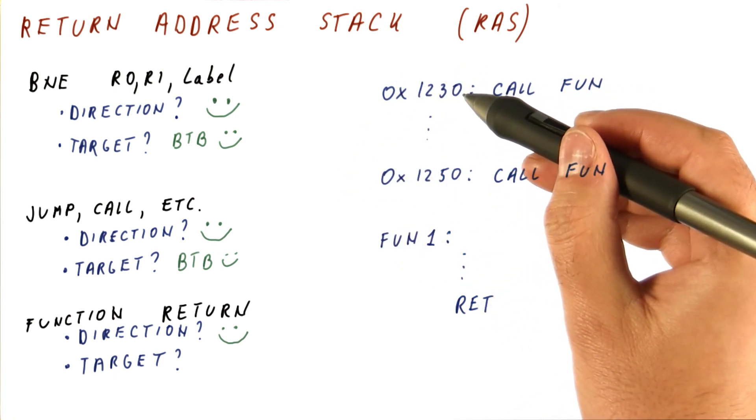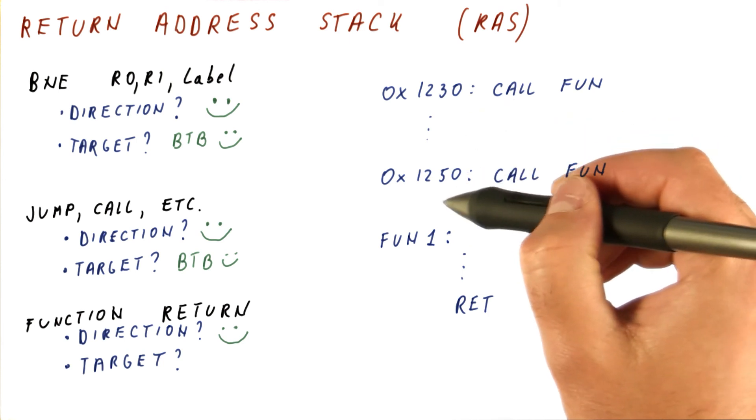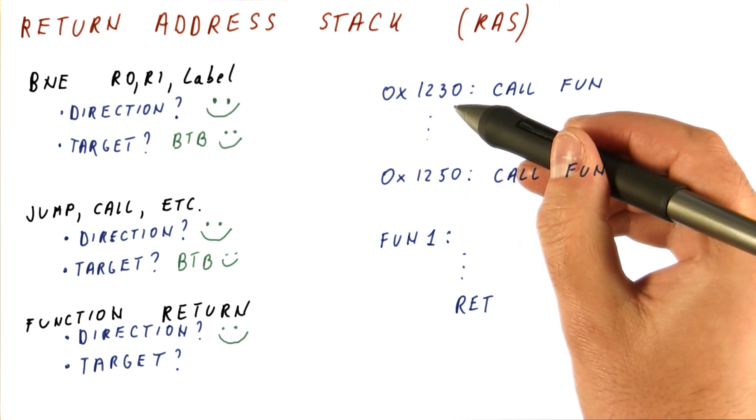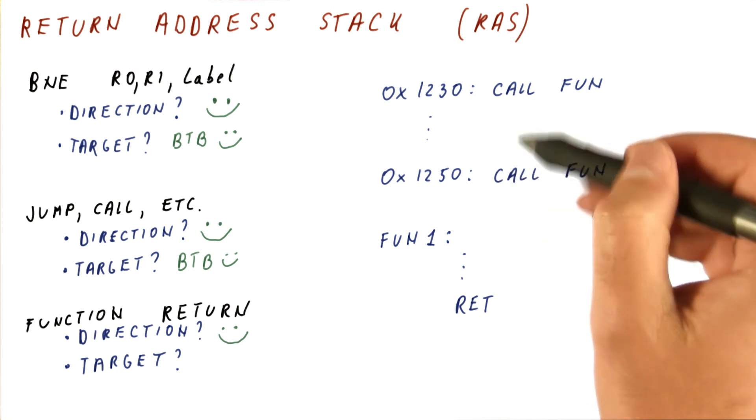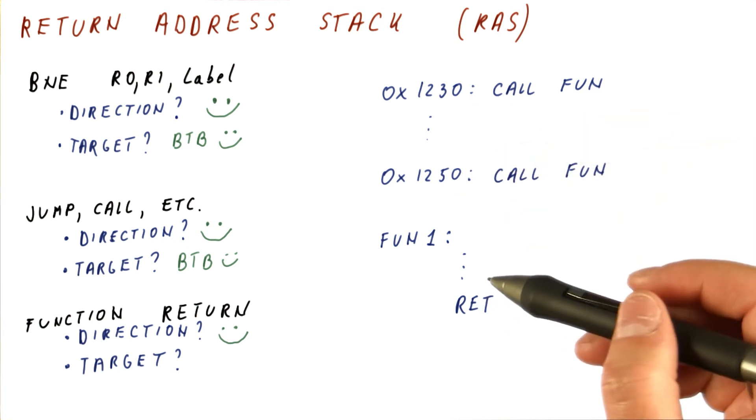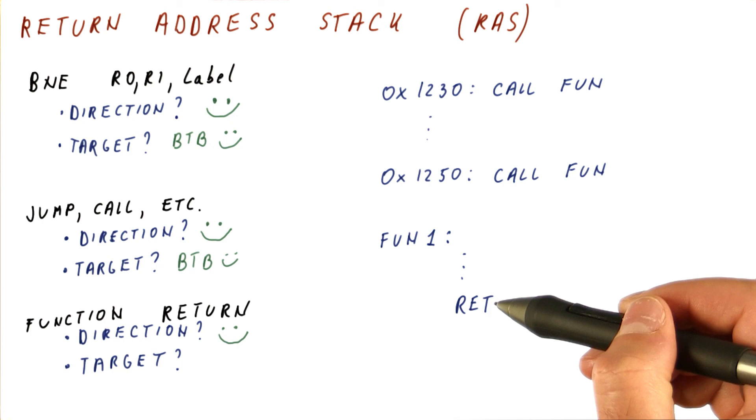Next, we come back to this code again. And again, the BTB is predicting here, while we should be returning here, and then again and again, so it never predicts correctly. So the question is, how can we predict returns accurately?